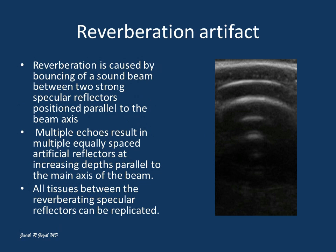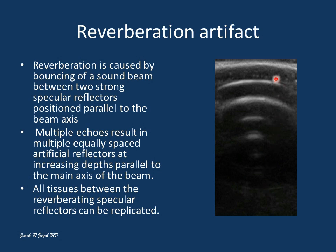Reverberation artifact. Reverberation is caused by bouncing of the sound beam between two strong specular reflectors positioned parallel to the beam axis. A strong specular reflector will cause reverberation of the artifact. Multiple echoes result in multiple equally spaced artificial reflectors at increasing depths parallel to the main axis of the sound beam. All tissues between the reverberating specular reflectors will be replicated.